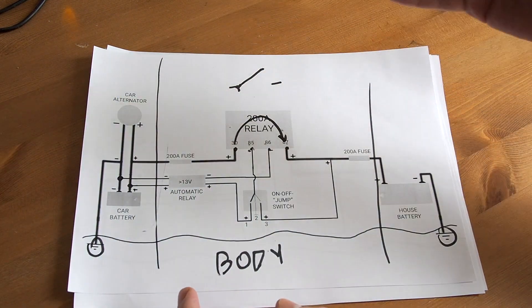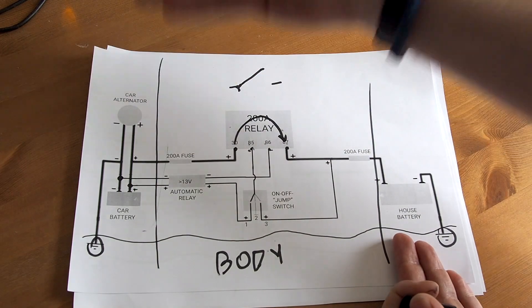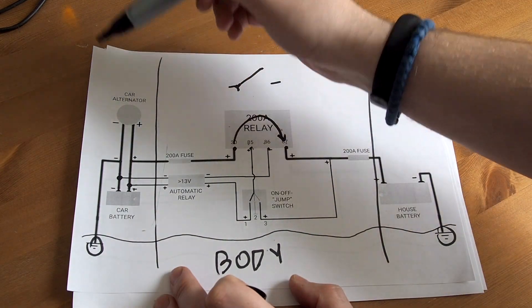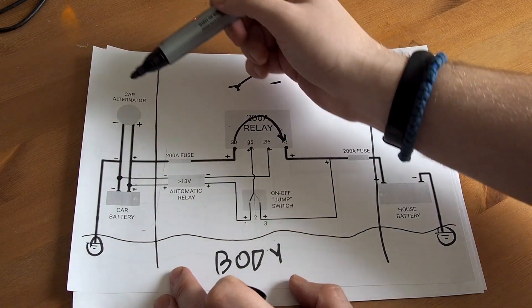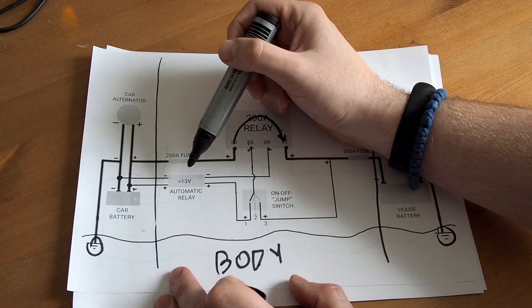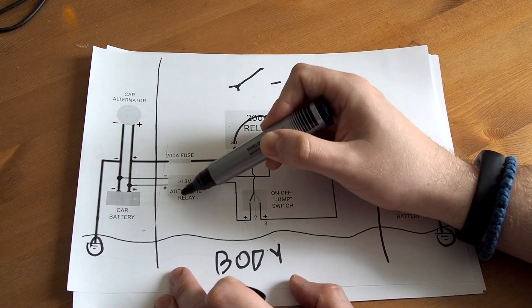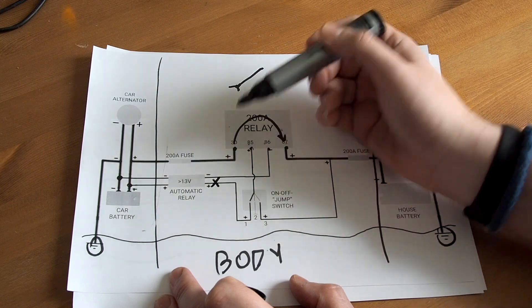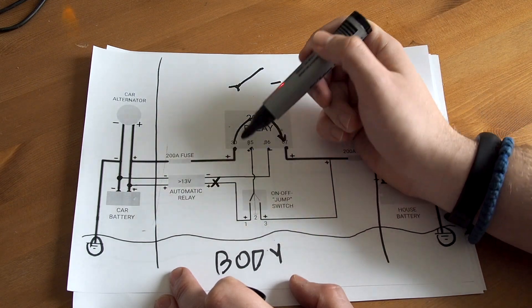But when your engine stops working, the voltage drops in your car system. The automatic relay breaks the power going through this wire.